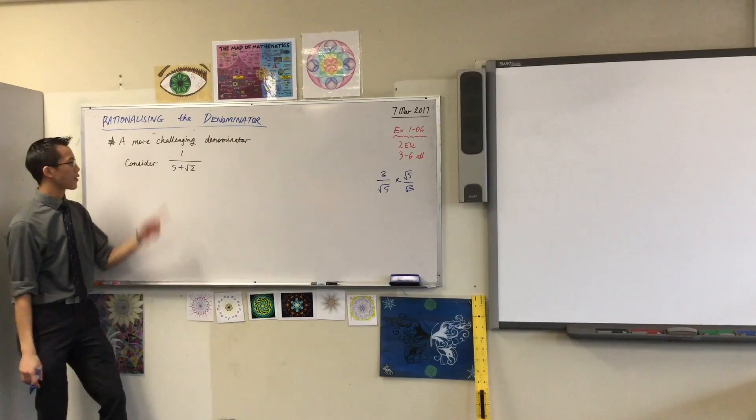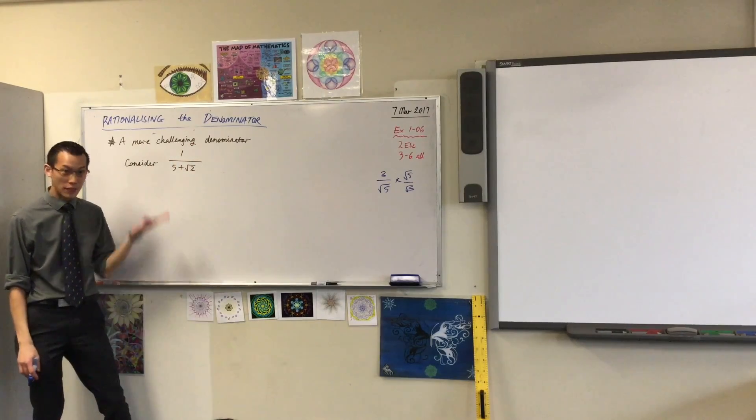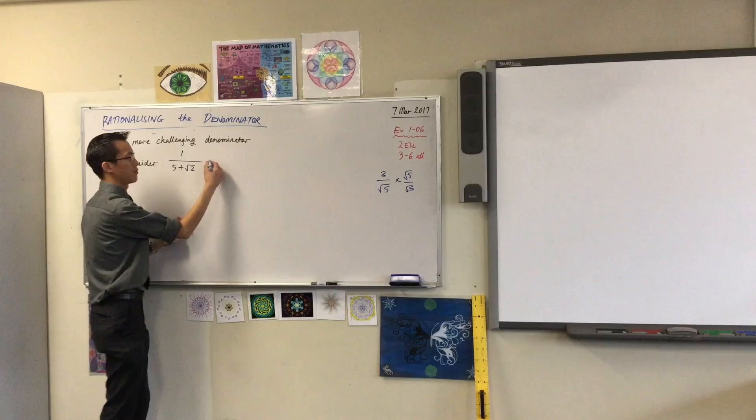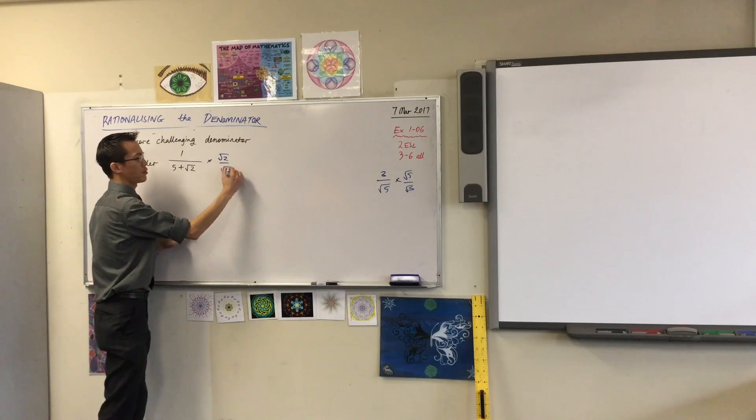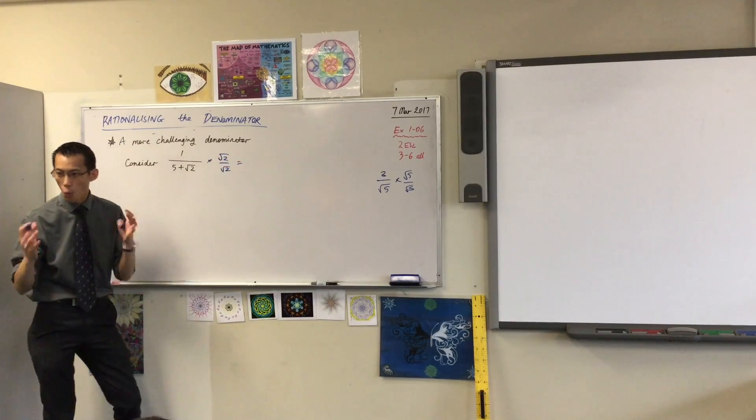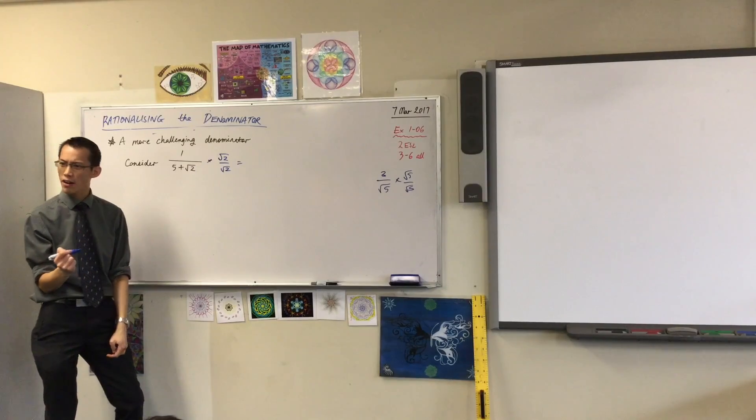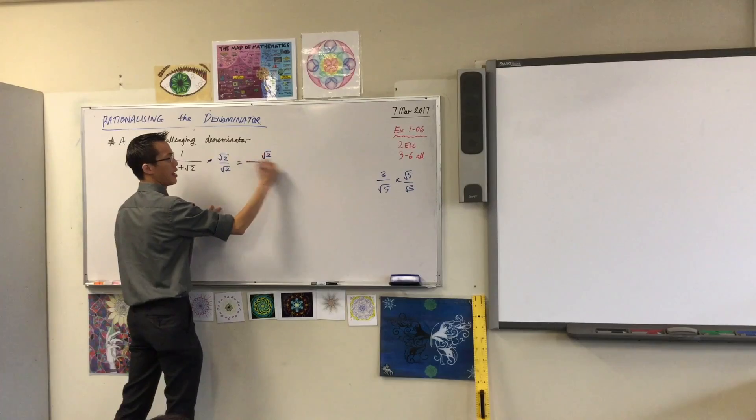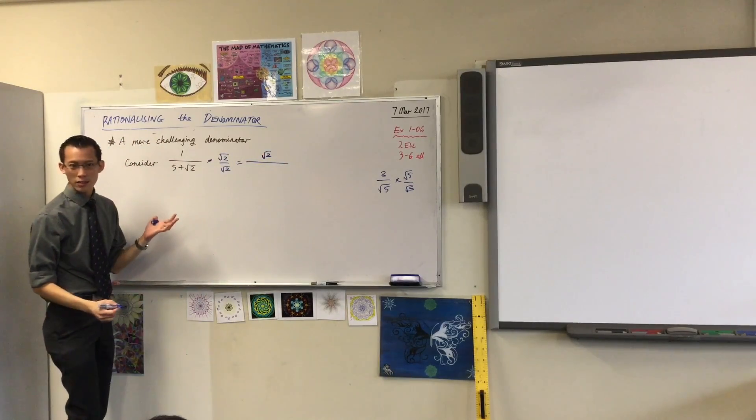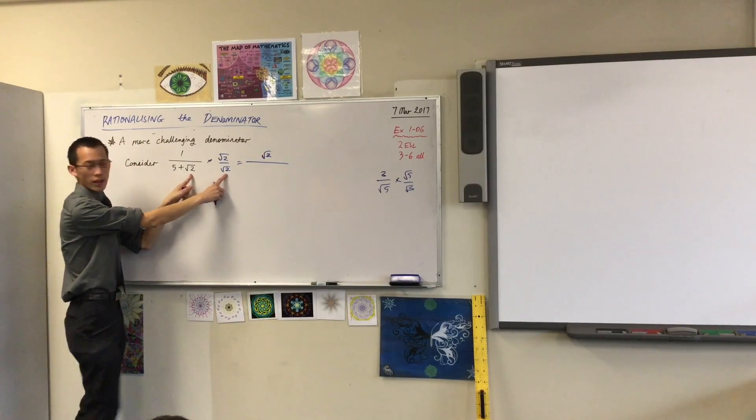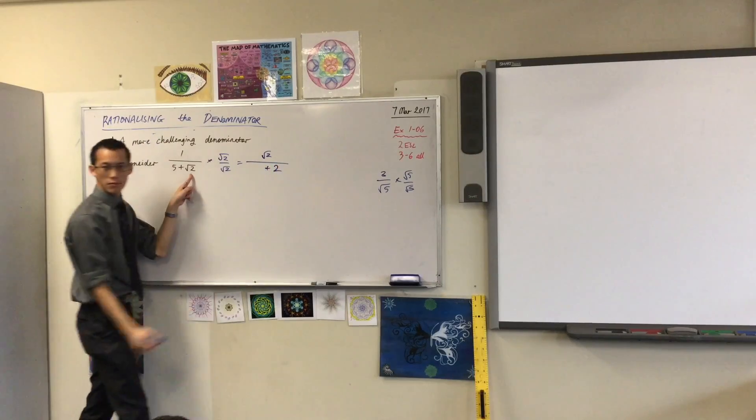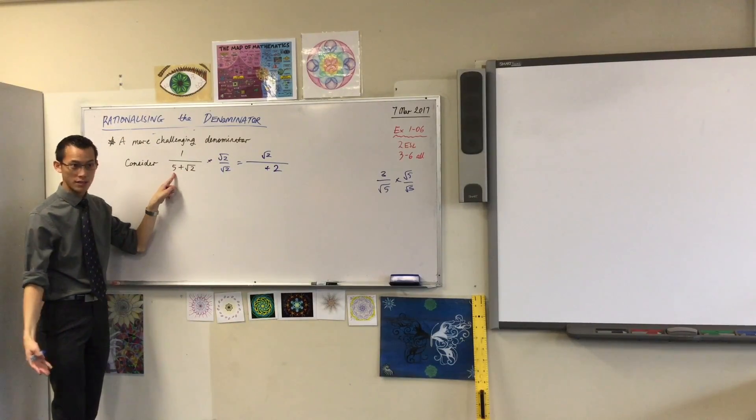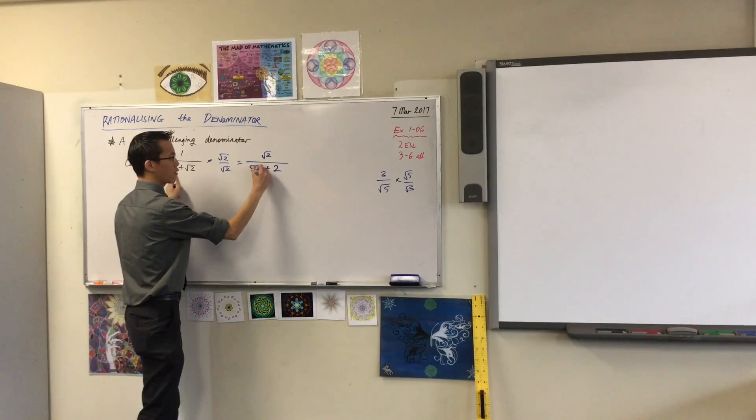But you run into a problem and that's why I call this a more challenging denominator if you try it here because if you say root 2 is the problem and you just multiply by root 2 over root 2, what happens? Tell me what's right. The numerator? It's just 1 times root 2 which is root 2 over 2. And then on the denominator well these guys work they become 2 but this also gets multiplied by the 5. Did you notice that?